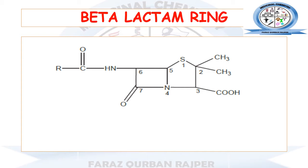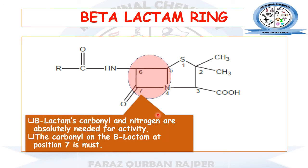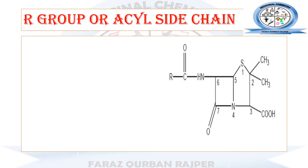Now let's consider the beta-lactam ring region — the four-membered ring in the penicillin structure. The beta-lactam ring contains a carbonyl carbon and a nitrogen atom; these two are essential for activity and must be left unsubstituted. If we modify this nitrogen, antibacterial activity will be decreased. Similarly, the carbonyl functional group at position seven must also be left unsubstituted.